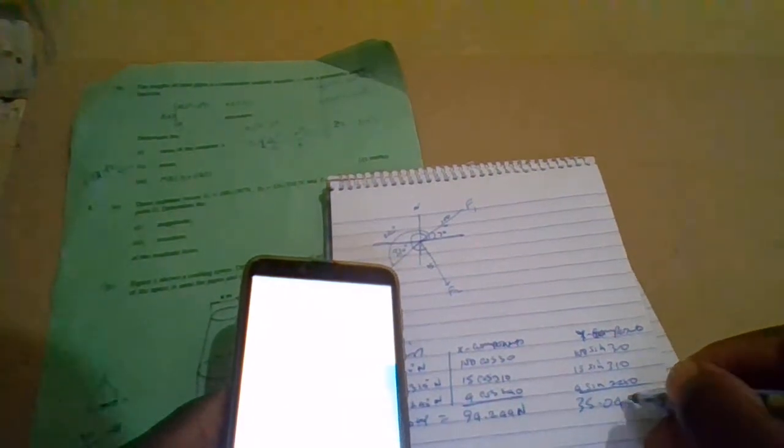Y component, it would be 100 sin 30 plus 13 sin 310 plus 4 sine 240, equal to 5.045.